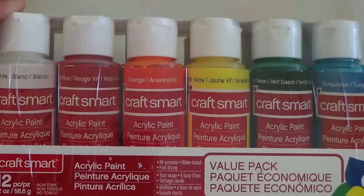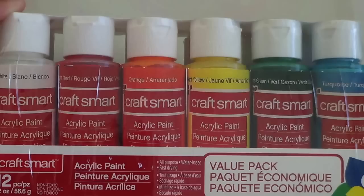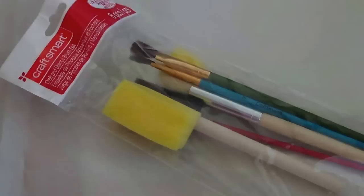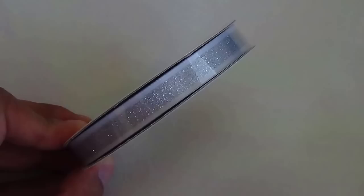For this project you'll need a mason jar - you probably have one around the house. If not, I picked this one up at Michael's. I also bought this at Michael's, a mason jar lid with a coin insert. You'll need acrylic paint in whatever colors you prefer, some paint brushes, and ribbon, which is optional.